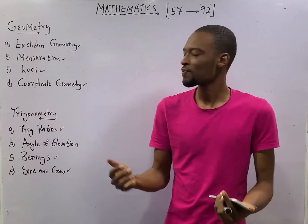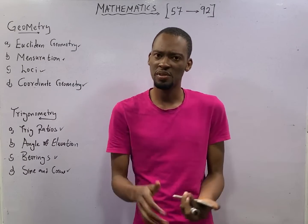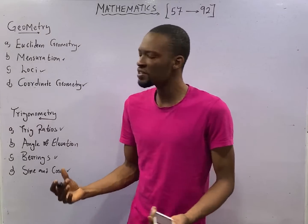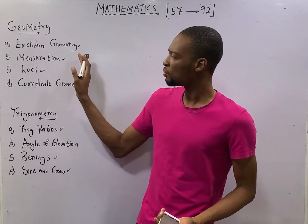This is episode number 84 of the 120 Days to JAMB Mathematics with Flash Isaac. In this episode, we shall be solving some questions under mensuration.